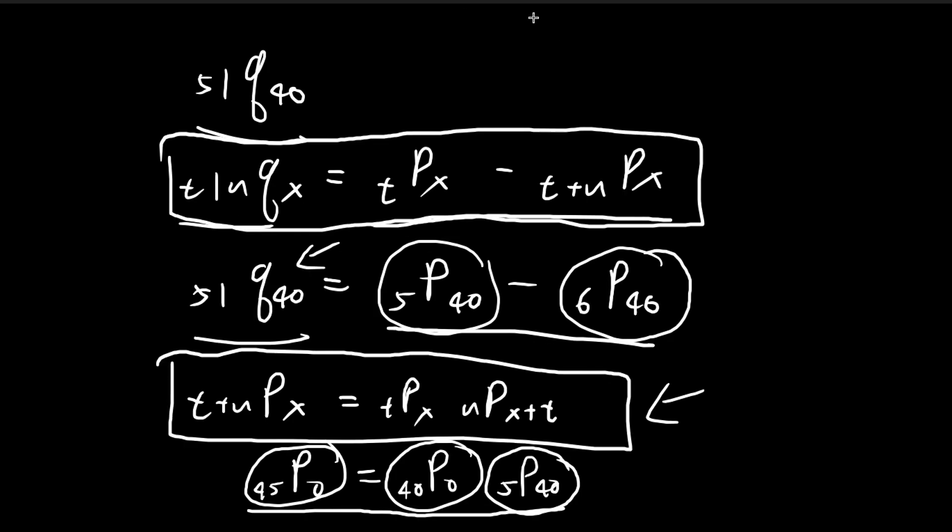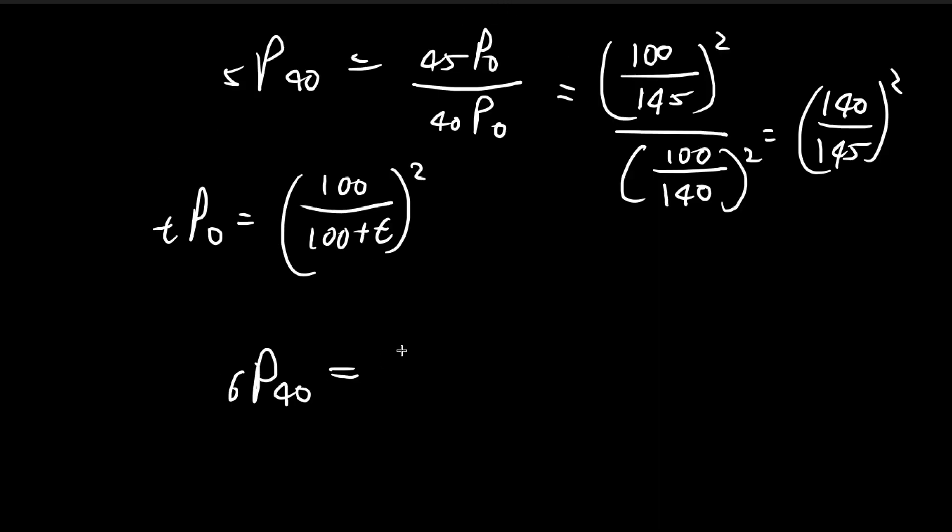We can do the exact same thing for 6p40. This becomes 46p0 divided by 40p0, which becomes 140 divided by 146 squared.